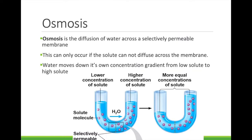In diffusion, the molecules were able to pass through the membrane. When they cannot pass through the membrane, instead the water in the solution is what moves. This is osmosis — the diffusion of water across a selectively permeable membrane.